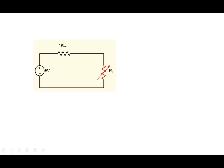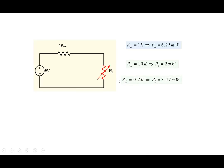As an example: 5 volts and 1 kΩ. If we connect RL = 1 kΩ, that is the optimum value and power is 6.25 mW. If we connect something larger, say 10 kΩ, power is 2 mW — less. If we connect something smaller, say 200 Ω, power is 3.47 mW — also less. So for RL both above and below 1 kΩ, power is smaller; it is maximized at RL = R.